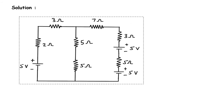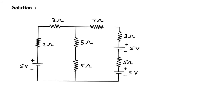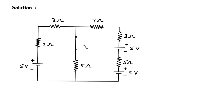Solution. First of all we will simplify this circuit. Here we can see this 5 ohm and this 5 ohm are connected in series. So in series they will be added, giving 5 ohm plus 5 ohm equal to 10 ohm.